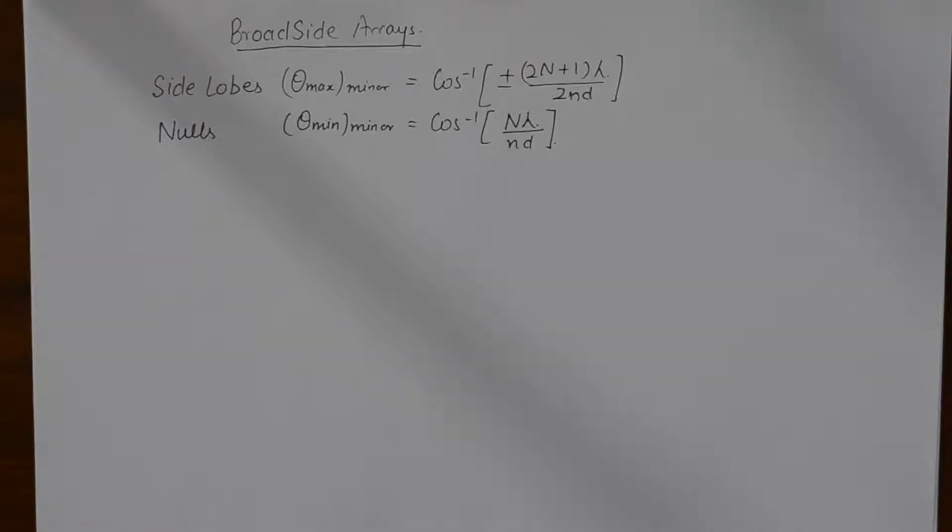Now in the previous tutorial we discussed that broadside array has principal maxima at 90 degrees and 270 degrees and principal minima at 0 degrees and 180 degrees.